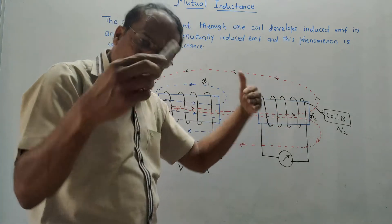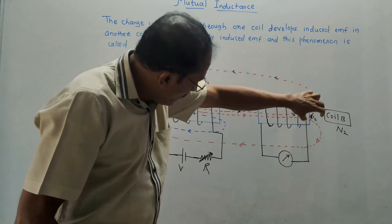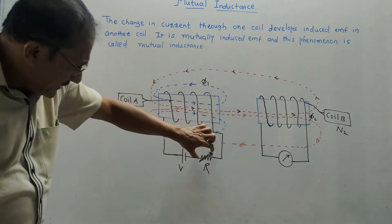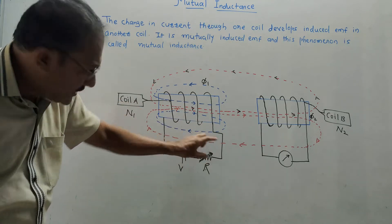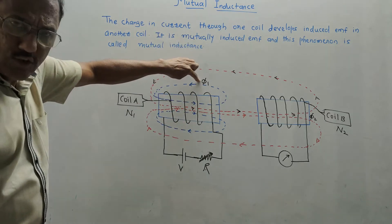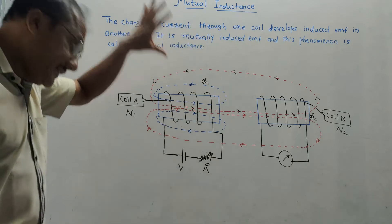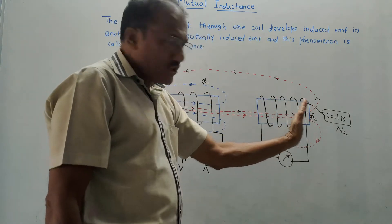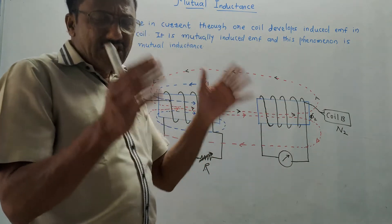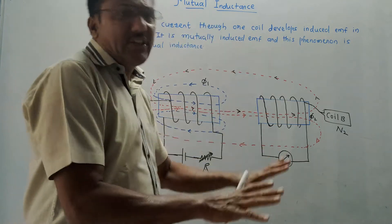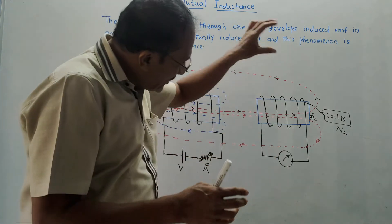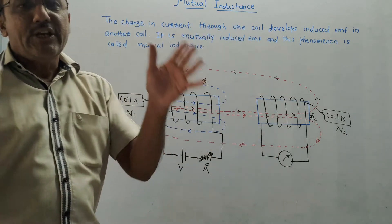Phi2 is called mutual flux because it is the flux obtained from coil A. This is a variable resistance — if we vary it, the current through the coil will change. Due to the change in current, flux linkage with coil A (phi1) will also change. Similarly, the mutual flux phi2 will also change. According to Faraday's law, whenever there is a change in flux, an EMF — electromotive force — is induced. This induced EMF is called the mutually induced EMF.